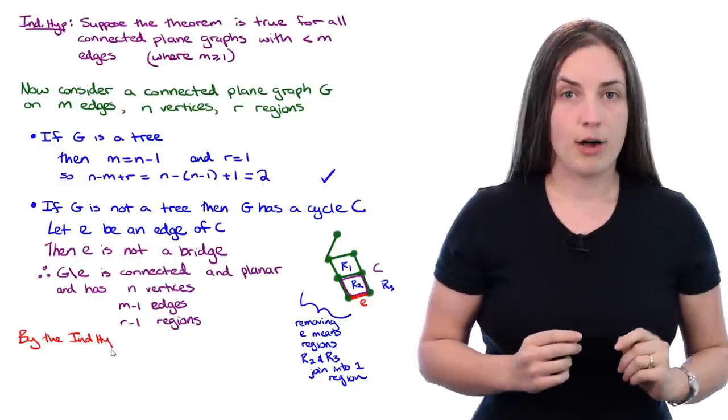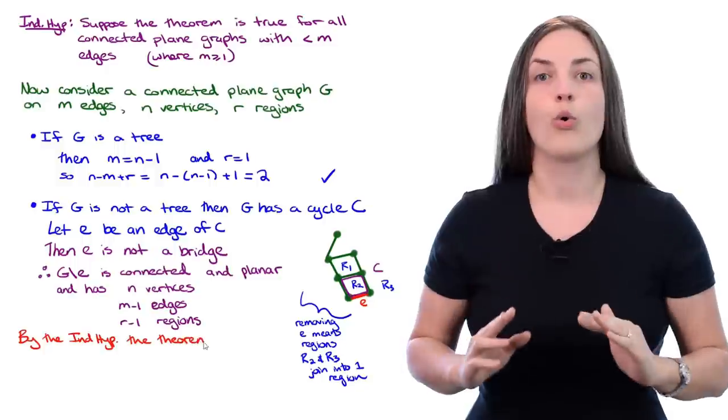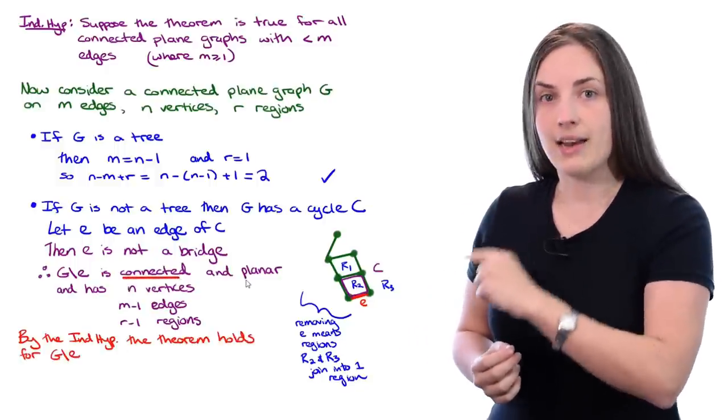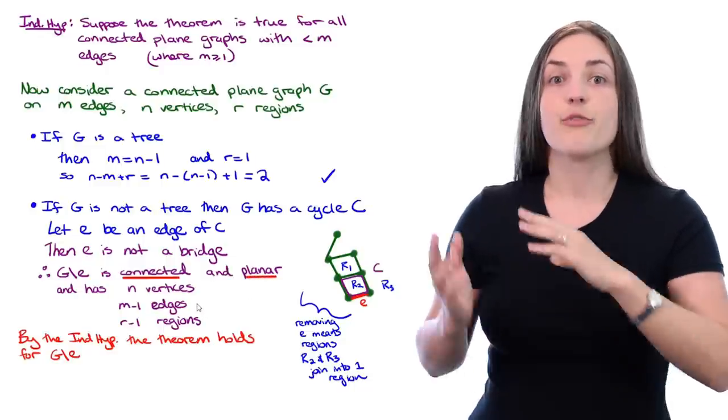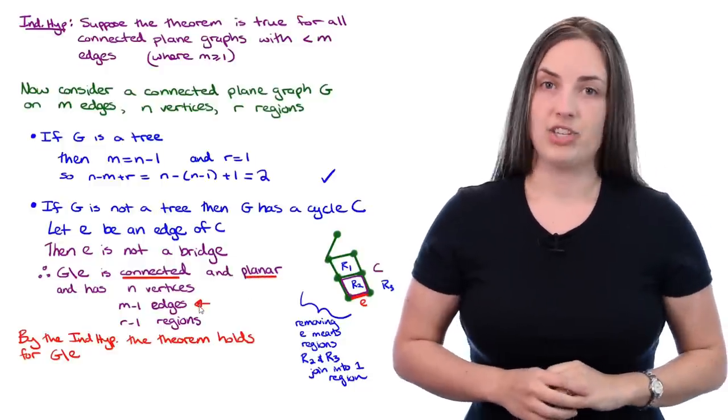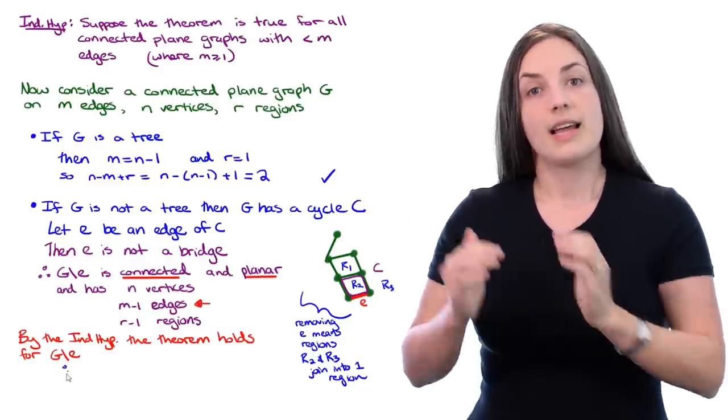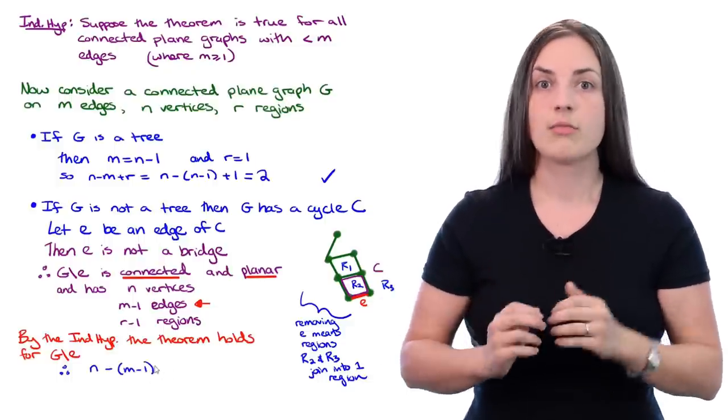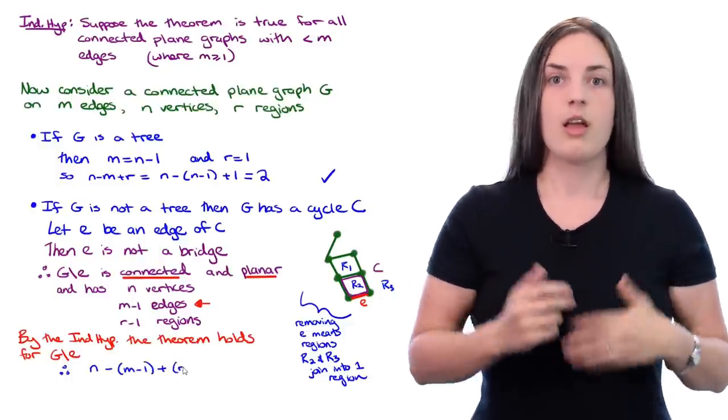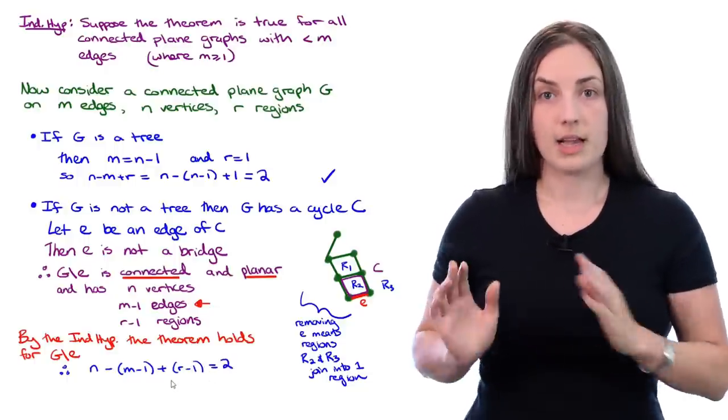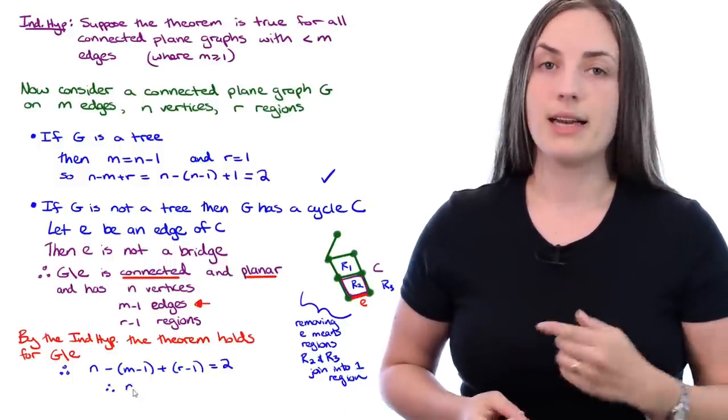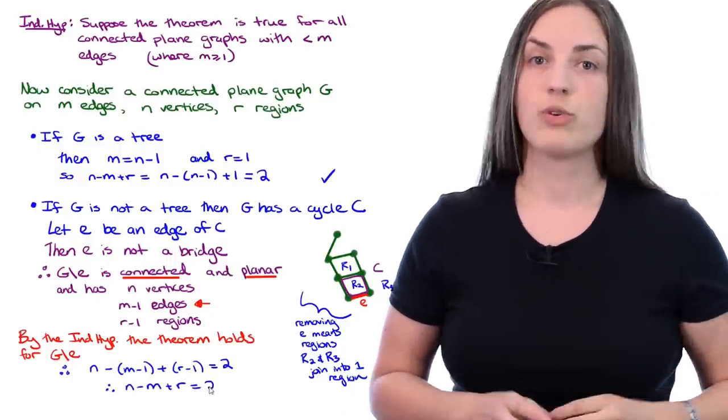In general, removing an edge of a cycle in a plane graph will decrease the number of regions by one. Thus, by the inductive hypothesis, the theorem holds for the graph G without E. Remember, G without E is connected, a plane graph, and has fewer than M edges.